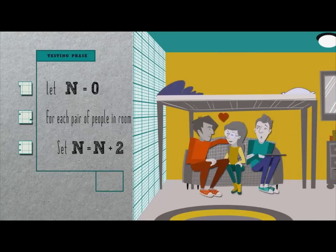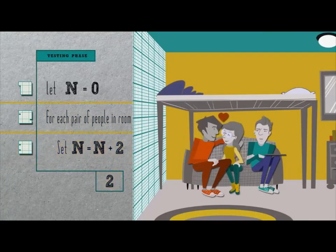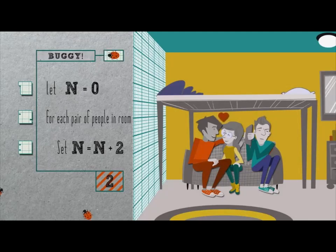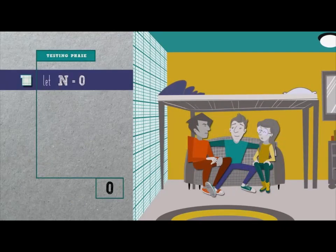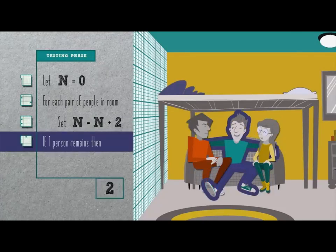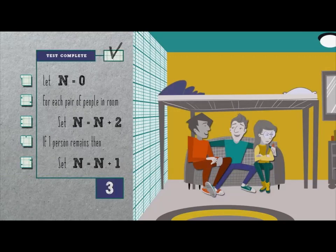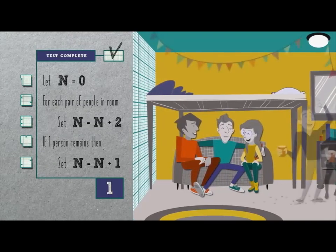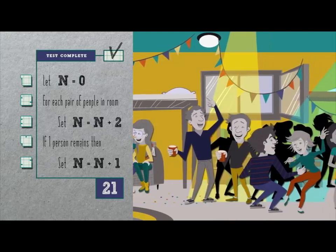But what if there are three people in the room? We initialize n to zero. For a pair of those people, we increment n by two, but then there isn't another full pair, so line two no longer applies. By this algorithm's end, n is still two, which isn't correct. This algorithm is said to be buggy. Let's fix it with new pseudocode: let n equal zero; for each pair of people in room, set n equal to n plus two; if one person remains unpaired, set n equal to n plus one. We've introduced a condition — otherwise known as a branch — that only executes if there's one person we could not pair. Whether there's one, three, or any odd number of people, this algorithm will now count them correctly.